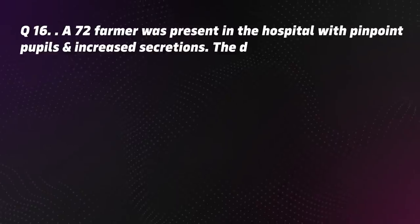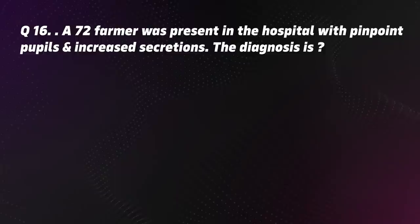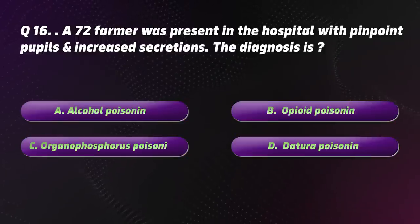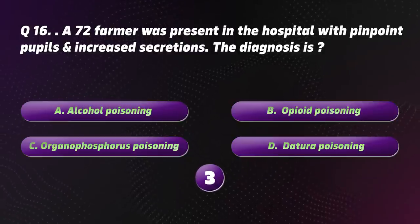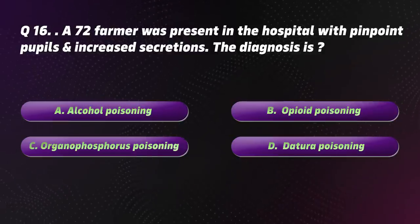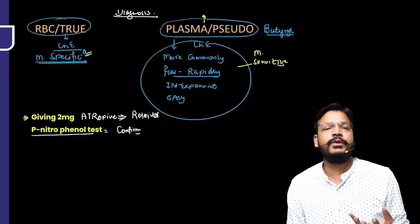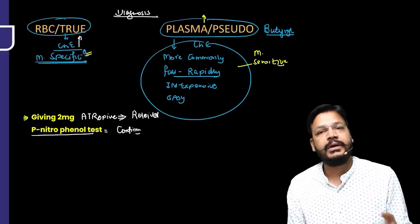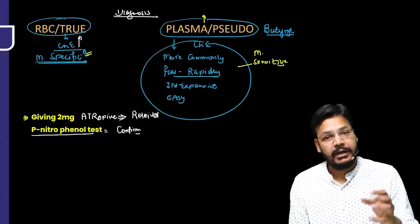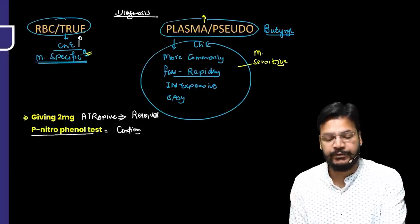Question 16. A 72-year-old farmer presented with pinpoint pupils and increased secretions. The correct diagnosis is C — Organophosphorus poisoning. Tests for diagnosis include RBC cholinesterase (most specific) and pseudocholinesterase or butyryl/plasma cholinesterase level (most sensitive). Paranitrophenol in urine is also tested. Relief of symptoms with atropine is a significant diagnostic finding.